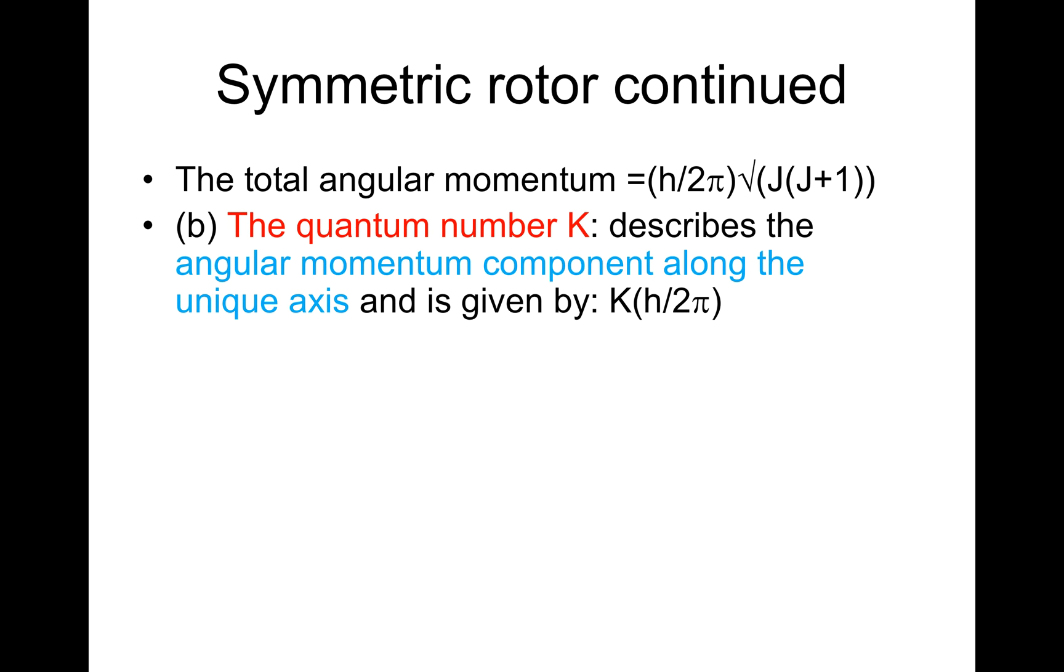B: the quantum number K describes the angular momentum component along the unique axis and is given by K times ℏ. It takes on values 0, ±1, ±2, ±3, up to ±J.